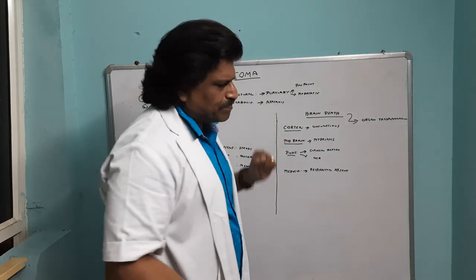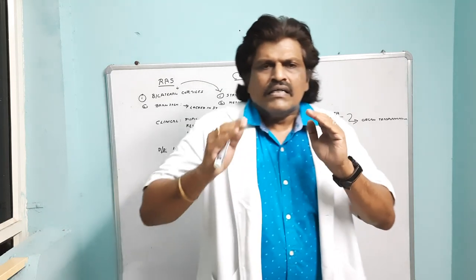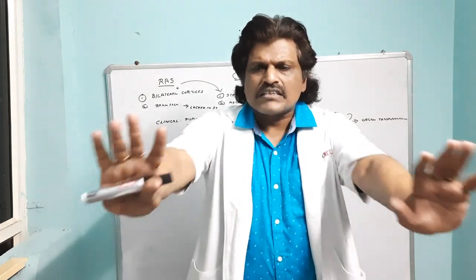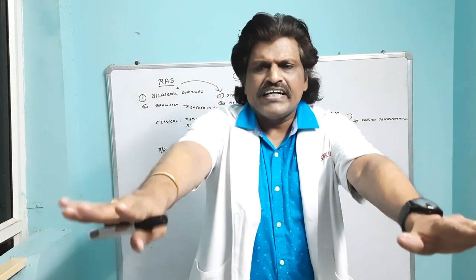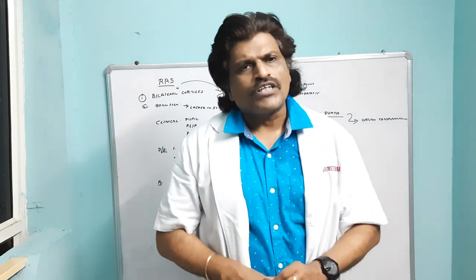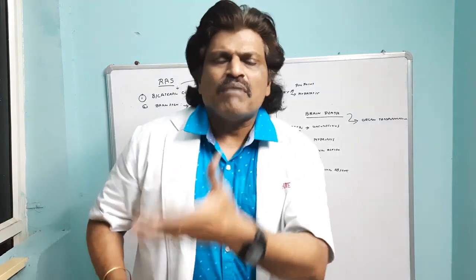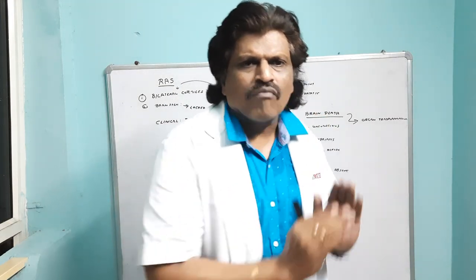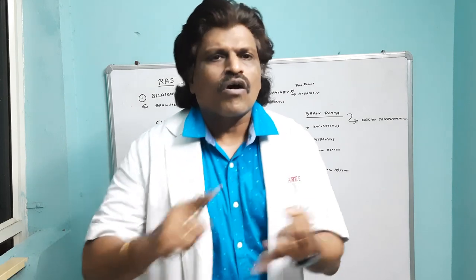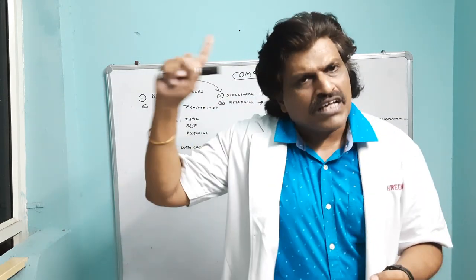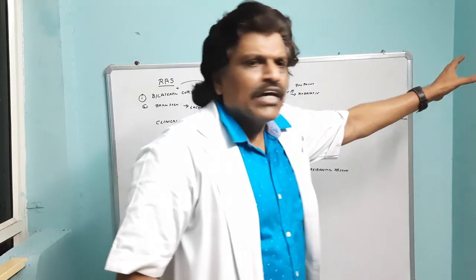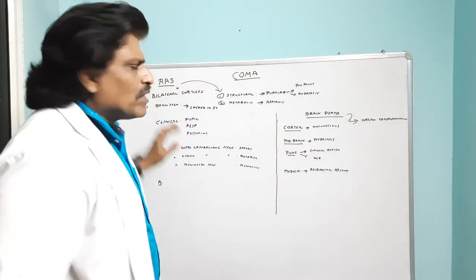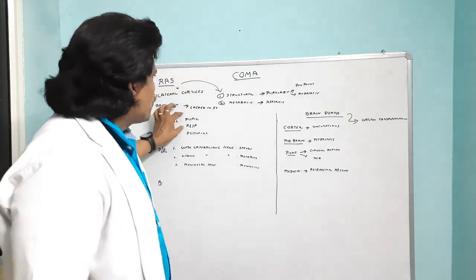If you want to identify a metabolic cause of coma, ask the patient to stretch their hands. If you find a flapping tremor — called asterixis — it is a metabolic cause of coma. So in summary: pupillary asymmetry indicates a structural cause, and asterixis indicates a metabolic cause.